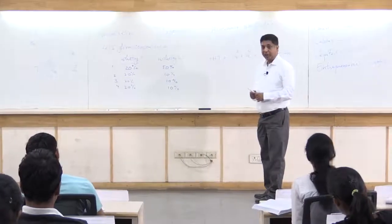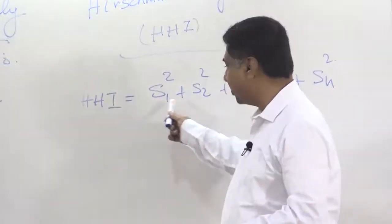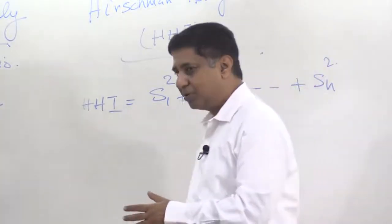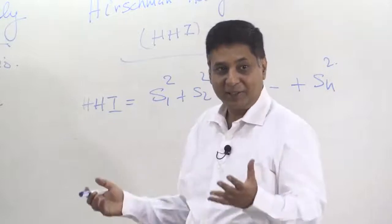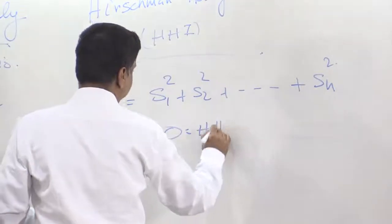What would be the HHI for perfect competition? All of these should be 0, right? Because each firm is too small, so all the 0 squared up, 10 million 0 squared will give you 0. For perfect competition, you will get 0.